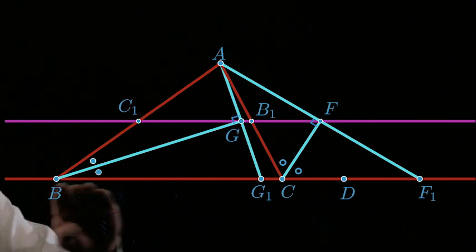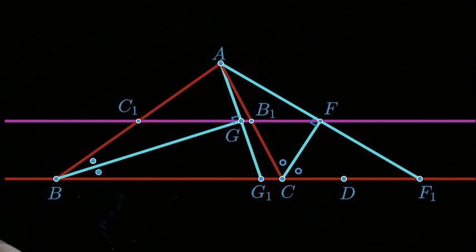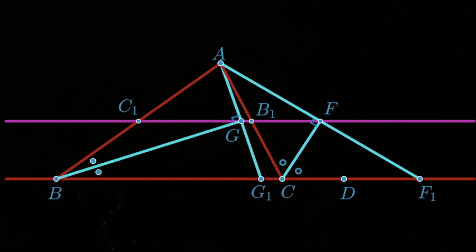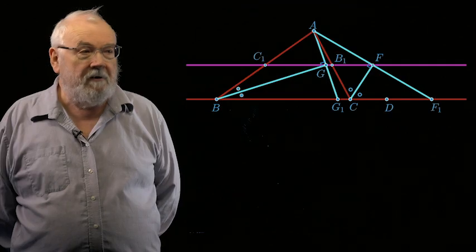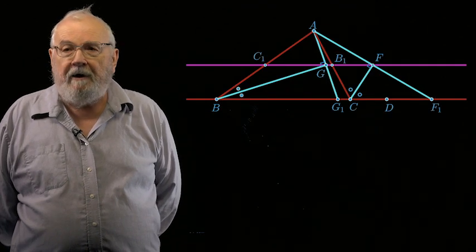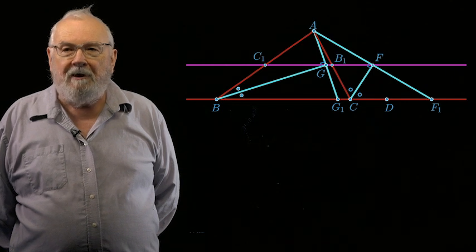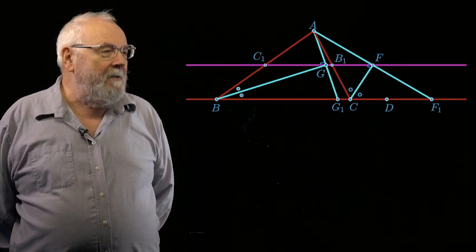In fact, it will carry the whole straight line BC to a straight line here, which passes through those four points. And therefore, they lie on a line. They are collinear. And we've finished the problem. It's all done, as if by magic.